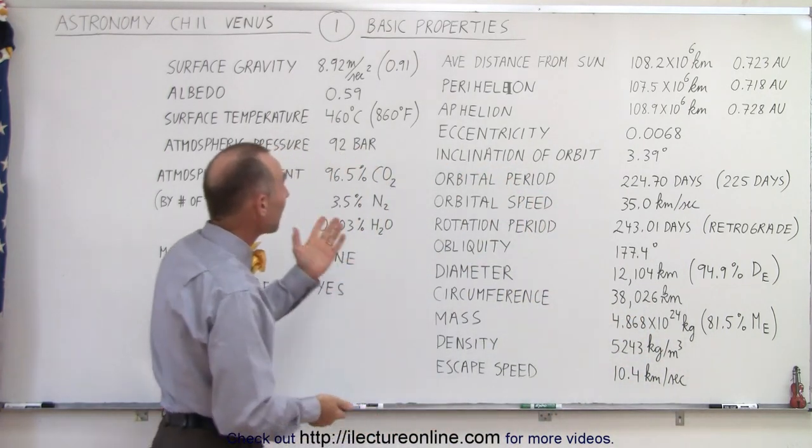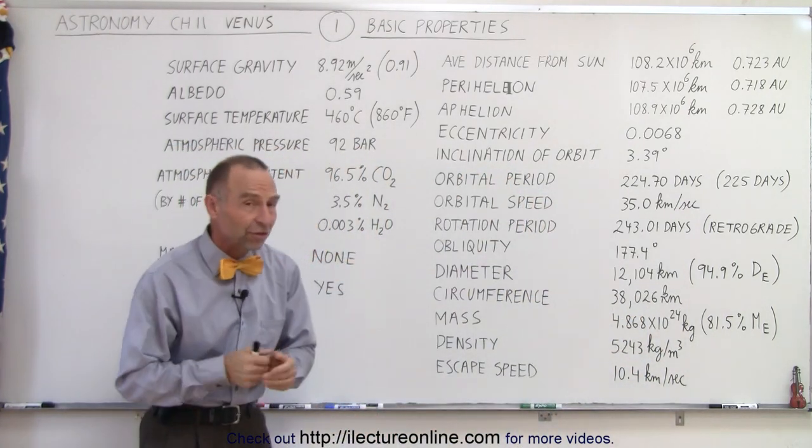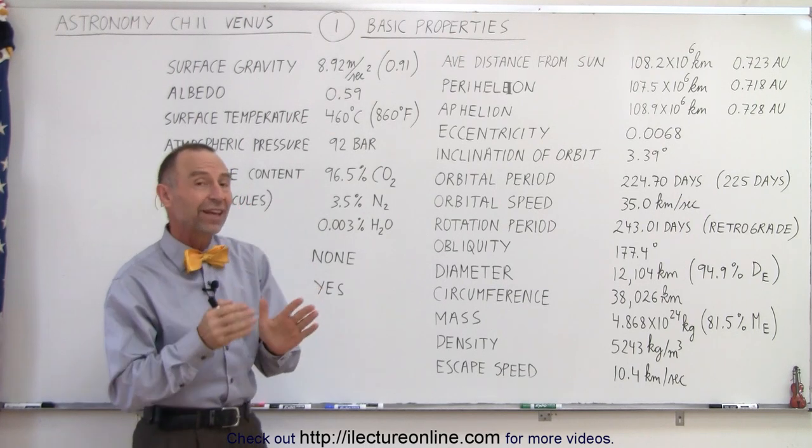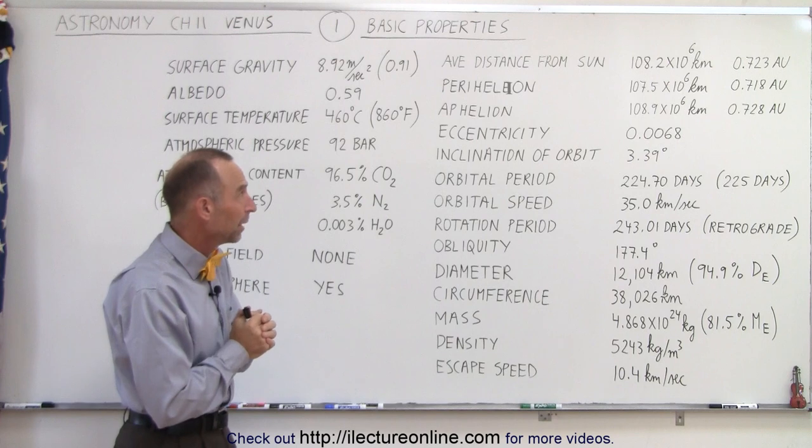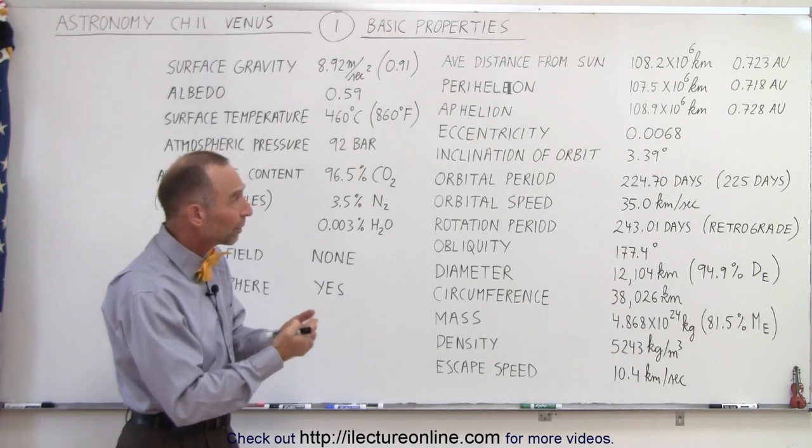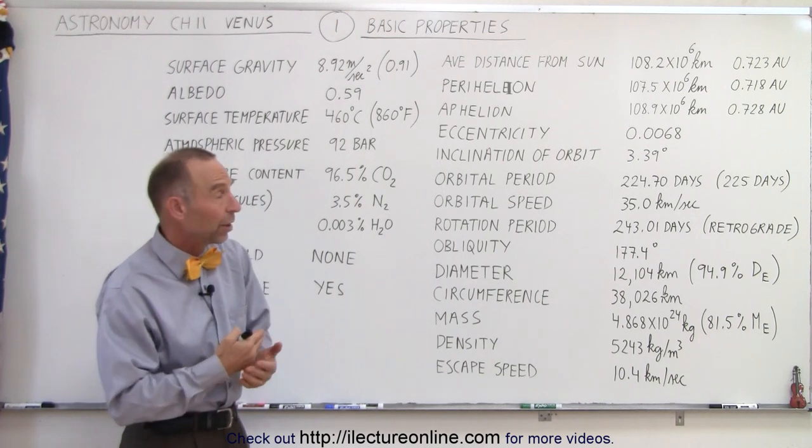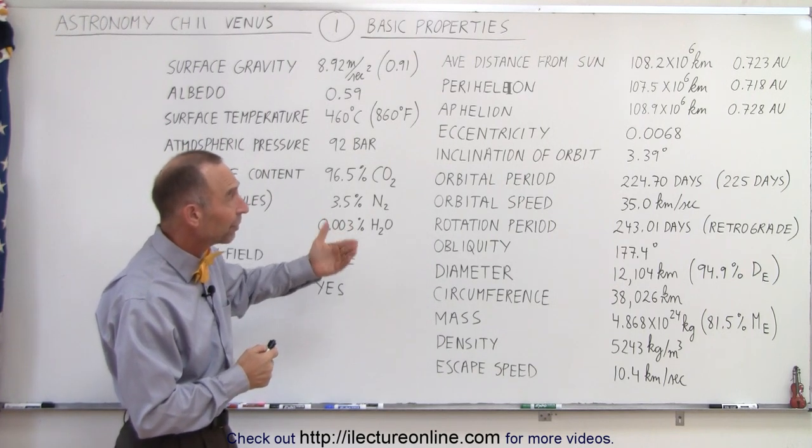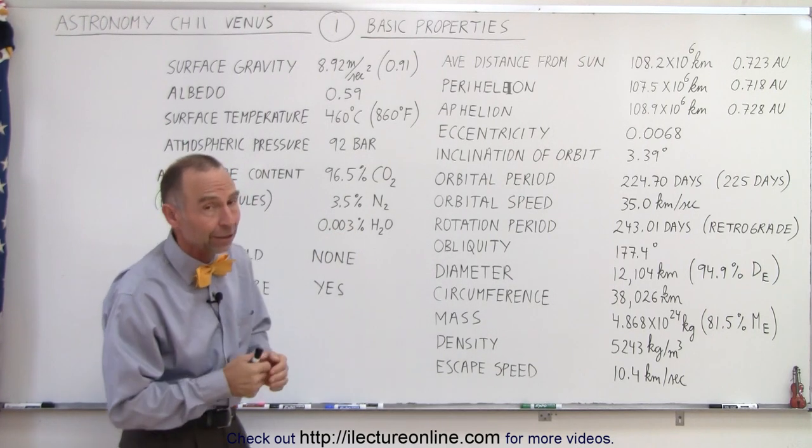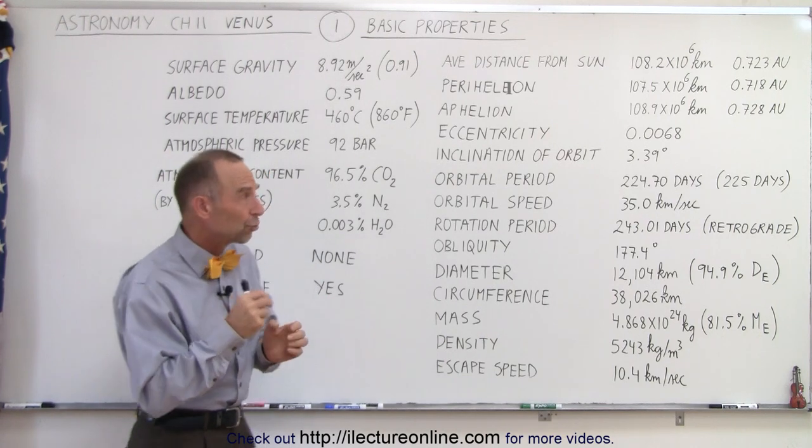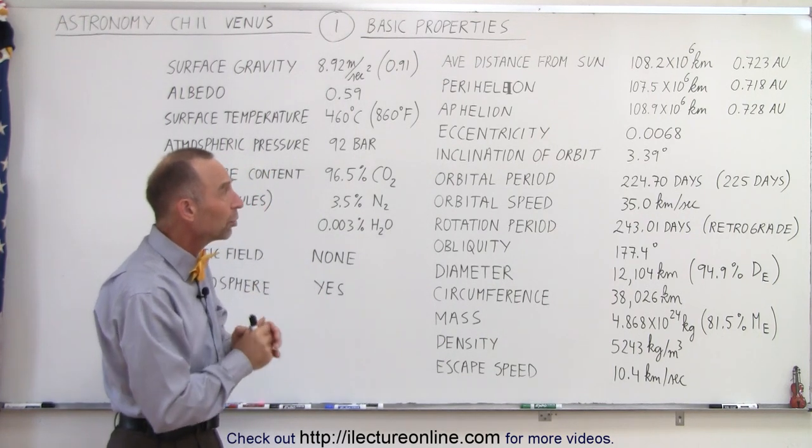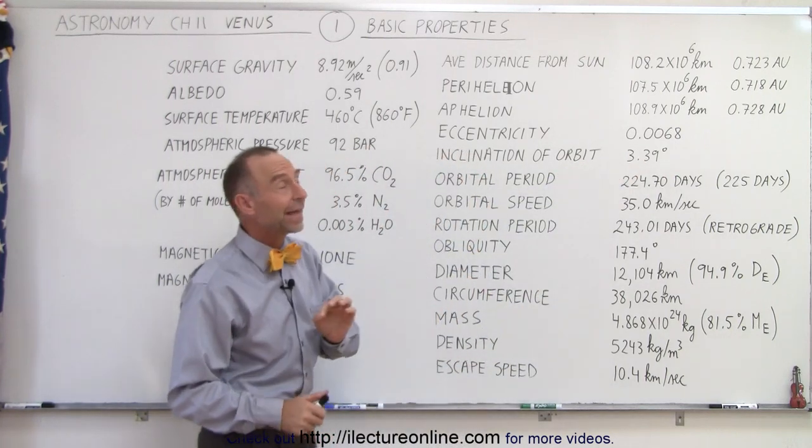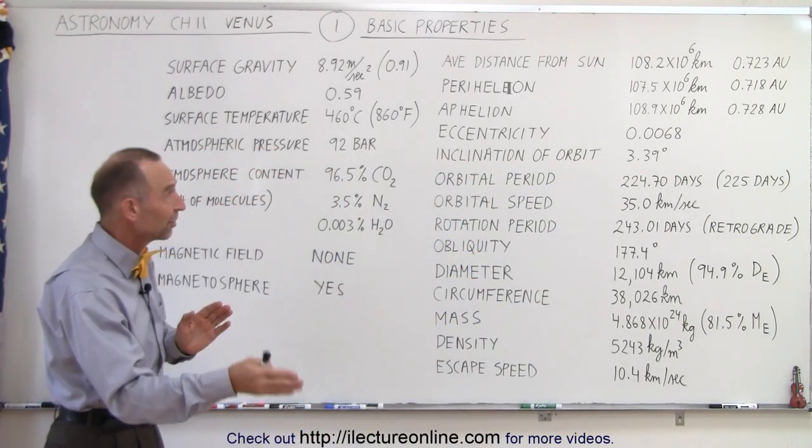Basic properties: average distance from the sun is about 108 million kilometers, which is about 72 percent the distance between the Earth and the Sun. At perihelion it's 107.5 million and at aphelion 108.9 million. Unlike Mercury, the eccentricity of the orbit is very small at 0.0068, so there's not a lot of variation in the distance between Venus and the Sun.